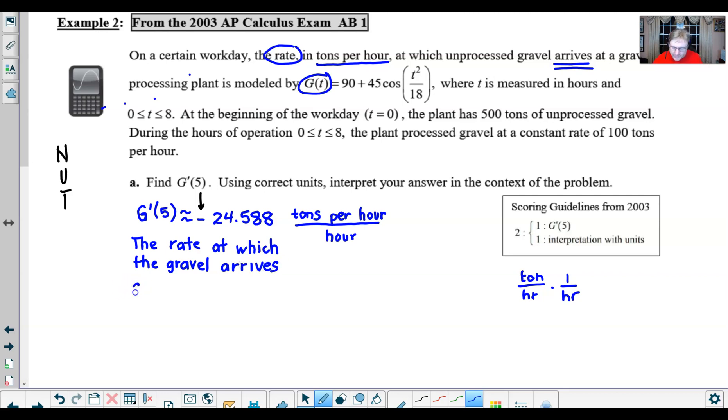Now if you want to say other things like at the plant, that's great but that's not really necessary. Things that aren't necessary I might put in parentheses. You could say unprocessed if you want to be a little bit more descriptive about that gravel, but you don't have to do that.